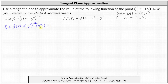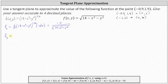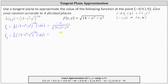Simplifying, one-half times negative two is negative one, giving us negative x divided by the square root of (14 minus x squared minus y squared). For the partial of f with respect to y, we differentiate with respect to y treating x as a constant: one-half times the base to the power of negative one-half, times the derivative of the base with respect to y, which is negative 2y. Simplifying, we get negative y divided by the square root of (14 minus x squared minus y squared).